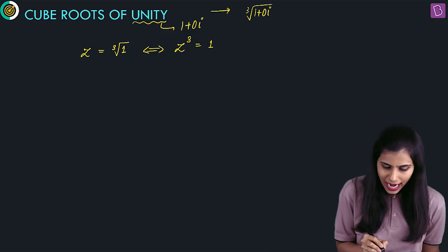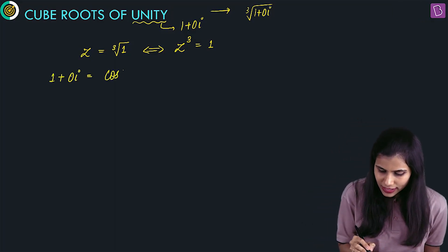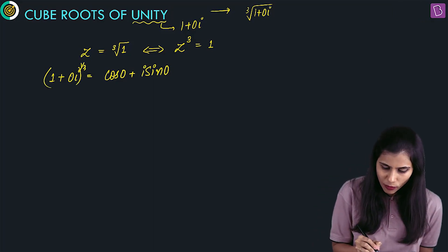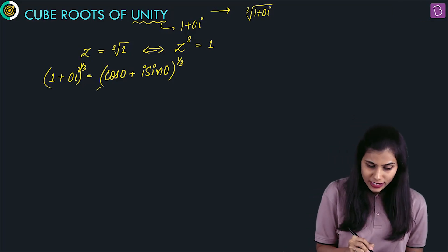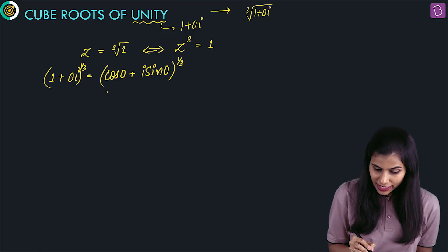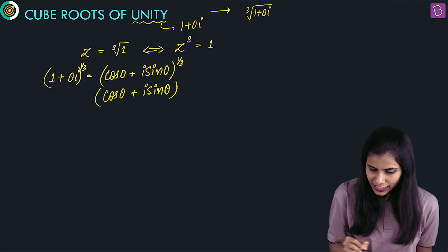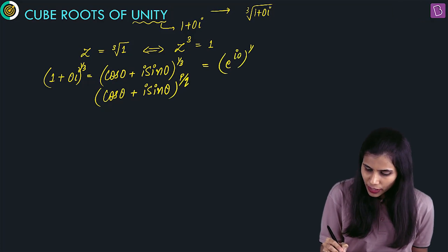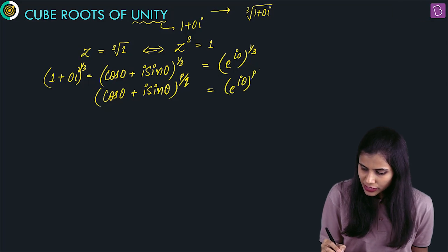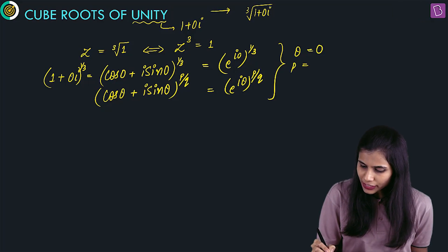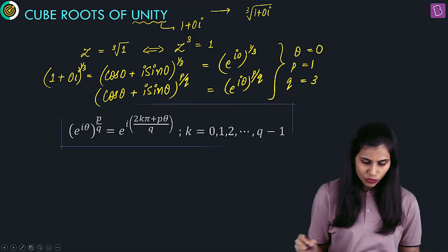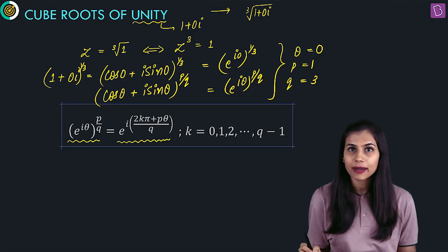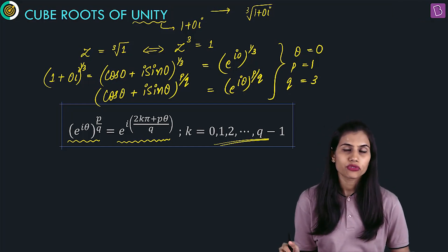My approach is going to be exactly the same. I'm going to write 1, that is 1 plus 0 iota, as cos 0 plus iota sin 0. I am interested in cube roots of unity, so this raised to the power 1 by 3 is what I need. This expression resembles cos theta plus iota sin theta raised to the power p by q. Alternatively, I can write this as e to the power iota 0, raised to the power 1 by 3, which resembles e to the power iota theta raised to the power p by q. Here, theta is 0, p is 1, and q is 3.